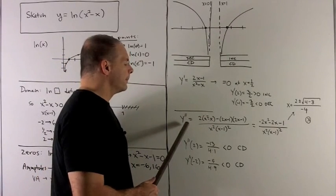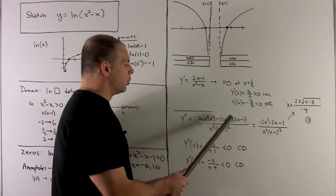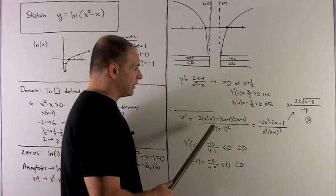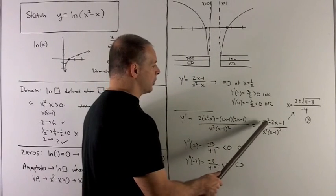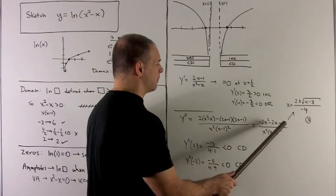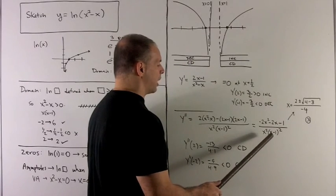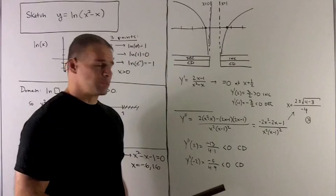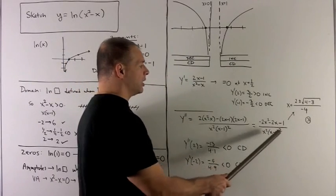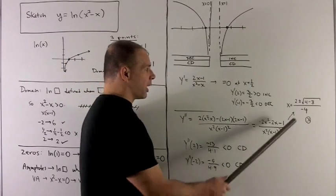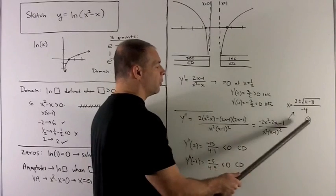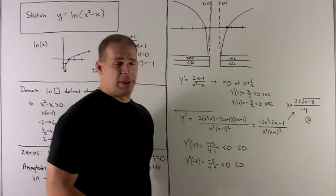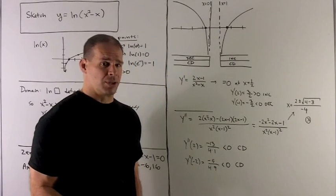For y double prime, I'm going to use my quotient rule. It's kind of a mess. But at the end of the day, what I get is minus 2x squared minus 2x minus 1 over x squared times x minus 1 squared. I try to find the roots in the top part of this equation, we're going to wind up taking the square root of negative number. So that's going to be garbage. There's going to be no zeros for this equation.